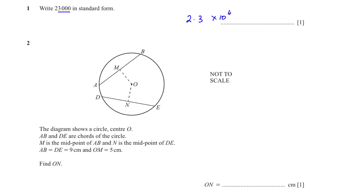Question 2: We have been given two chords AB and DE, which are equal to each other. M is the midpoint of AB and N is the midpoint of DE. OM is 5 cm and we need to find ON. Because the chords are of equal length, the perpendicular bisector of AB will be the same length as the perpendicular bisector of DE. Therefore OM equals ON, and ON is 5 cm.